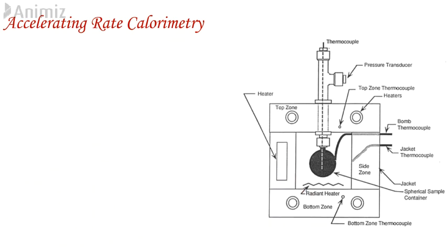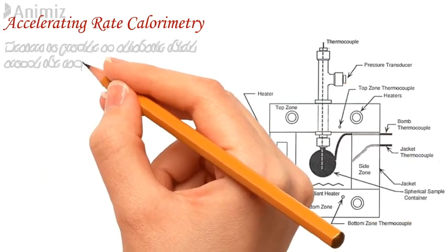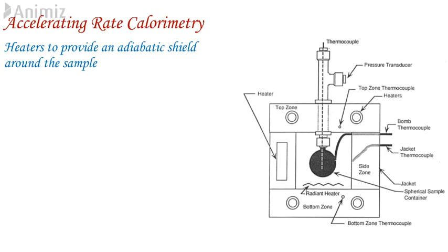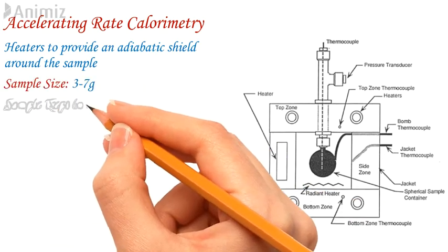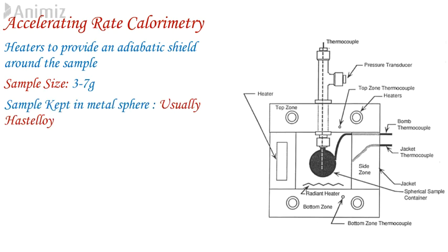Regarding the test procedure: the ARC is a commercially available adiabatic calorimeter that uses a heater to provide an adiabatic shield around the sample. It provides information on heat and pressure generated during reaction or decomposition, and assesses the potential likelihood of a runaway reaction occurring. The sample, typically 3–7 grams, is contained in a metal sphere — usually Hastelloy alloy — of diameter 2.5 cm. Heat losses to the metal sphere and ancillary equipment can account for up to 50% of total heat evolved, and any self-heating is abated to this extent.